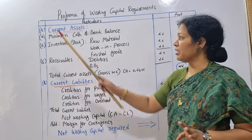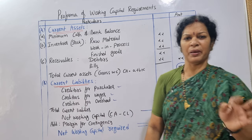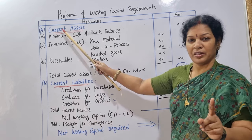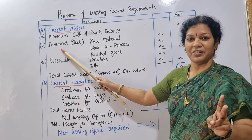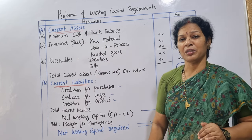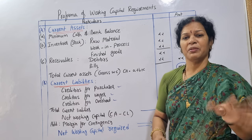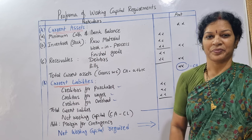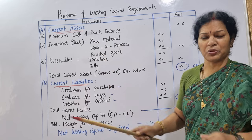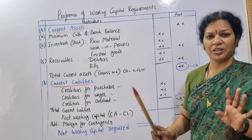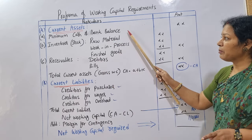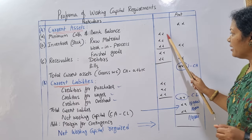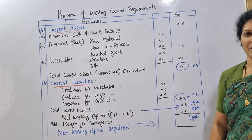The three points are: first, minimum cash or bank balance — that is the minimum cash balance or minimum bank balance. Second, inventories — cash balance, bank balance, and inventory. Inventory includes stock: in cost accounting terms, raw material, work in process, and finished goods. These are the three parts of inventory, separated into raw material, work in process, and finished goods.